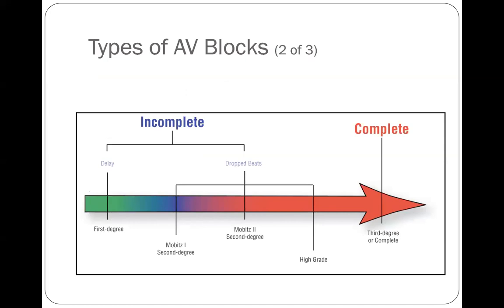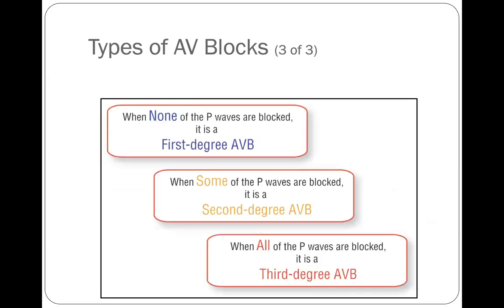In terms of how much is being blocked, we have incomplete blocks and complete blocks. Incomplete blocks are ones where some impulse is getting through. In complete blocks, no impulse gets through. In incomplete blocks, we don't really have dropped beats, or when we do, it's not because of a complete stopping of the system. In complete blocks, there is a complete failing of the AV node.